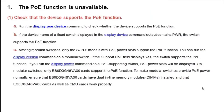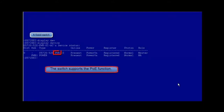First, let's check whether PoE is available. Check that the device supports PoE. Run the display PoE device command to check whether the device supports PoE. If the device name of a fixed switch displayed in the display device command output contains PWR, the switch supports PoE.